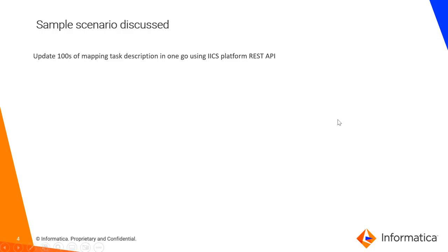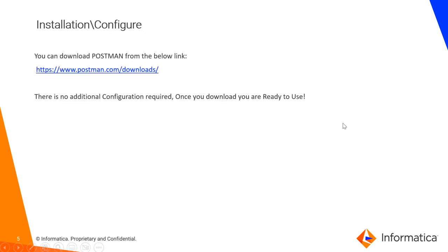The sample scenario we are going to discuss here is to update hundreds of mapping task descriptions. You can update other task details like advanced properties, the connection name, or the runtime environment of the task. But just for an example, we are going to update the mapping task description in one go for hundreds of tasks using IICS's platform REST API. You can download Postman from the link below — no additional configurations are required. Once downloaded, you can use it. Now let's get to the demo.